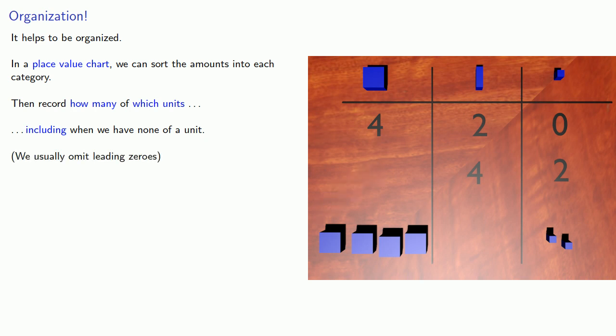And in the last row, we have 4 of these, and 2 of these. So we record those amounts. And 0 of these amounts in the middle.